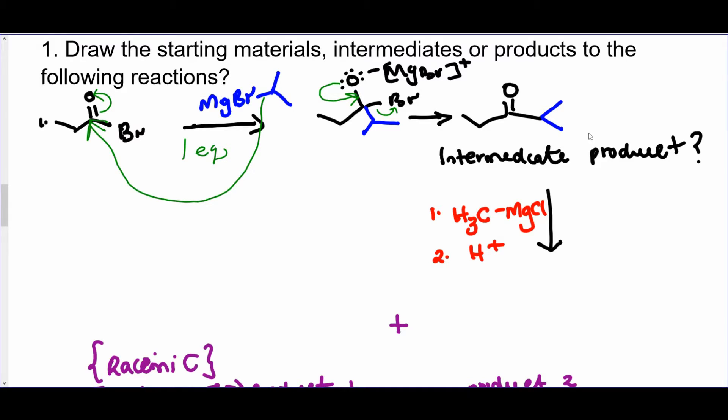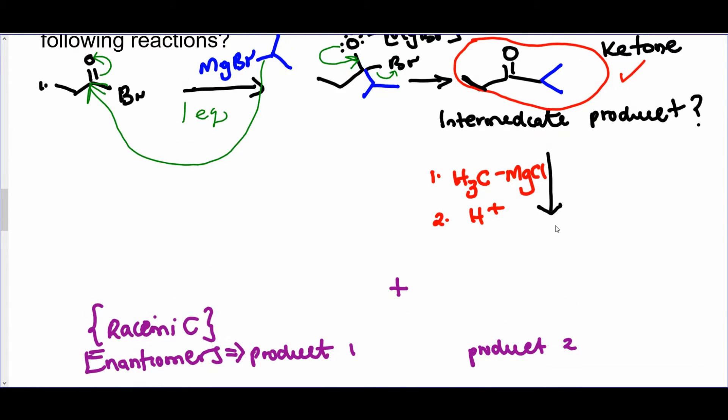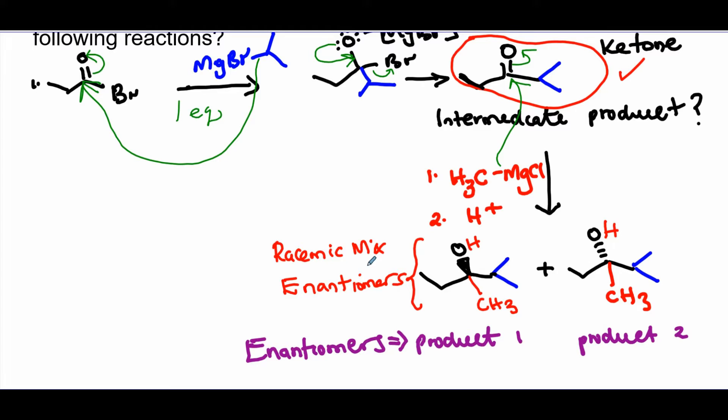So the actual product that you're looking to get is this. And that's going to be your intermediate product. So this guy is the intermediate product. It's not the final product. It is the intermediate product. And it's a ketone. Now, if you're given a second equivalent, followed by acid catalyzed quenching, this is going to attack here. You get O minus and the O minus will be quenched by the H plus. And you're going to get two products. So these are the two products that you get. They're going to be enantiomers.